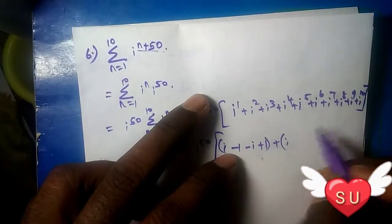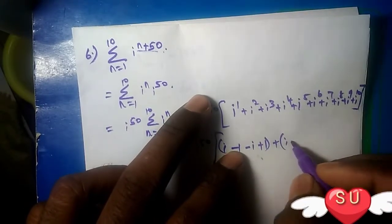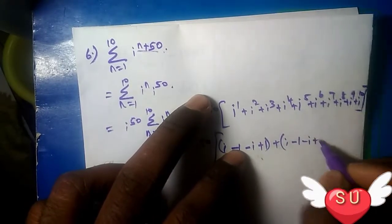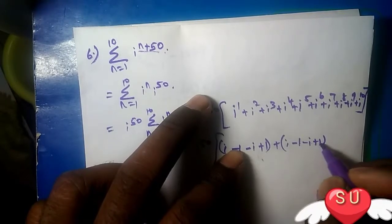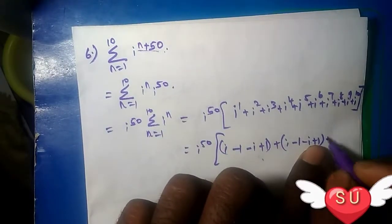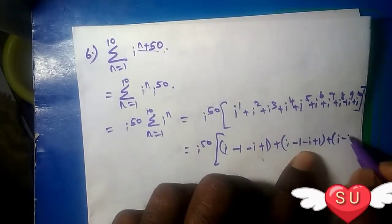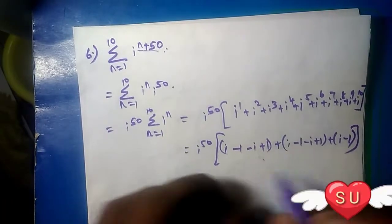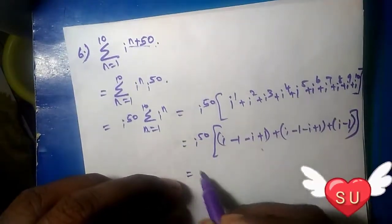This pattern repeats every four powers. So we have i^5 equals i again. Putting these values: i - 1 - i + 1, and this pattern continues. The sum equals 0.